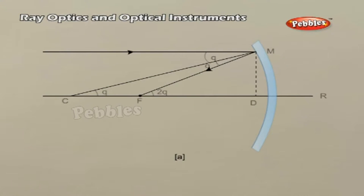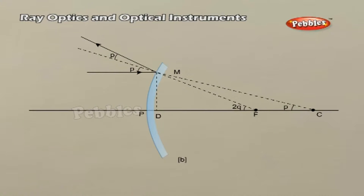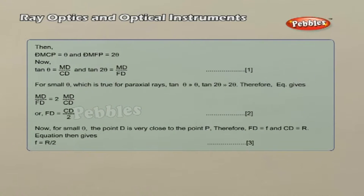The distance between the focus F and the pole P of the mirror is called the focal length of the mirror and is denoted by f. We now show that f equals R/2, where R is the radius of curvature of the mirror. The geometry of reflection of an incident ray is shown in the figure. Let C be the center of curvature of the mirror. Consider a ray parallel to the principal axis striking the mirror at M. Then CM will be perpendicular to the mirror at M. Let theta be the angle of incidence and MD be the perpendicular from M on the principal axis.